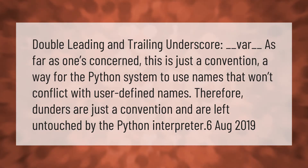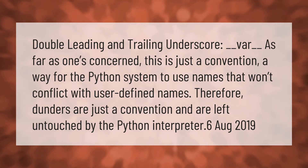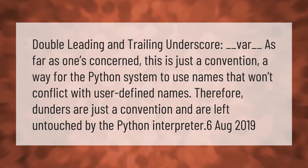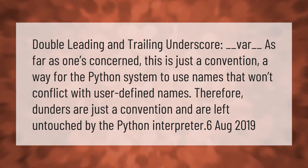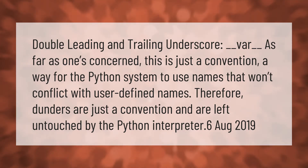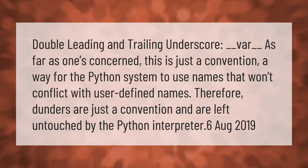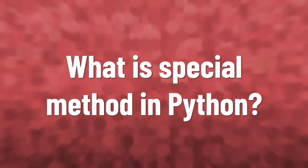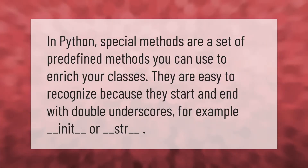Double leading and trailing underscores, or 'dunders', as far as Python is concerned, is just a convention — a way for the Python system to use names that won't conflict with user-defined names. Therefore, dunders are just a convention and are left untouched by the Python interpreter.